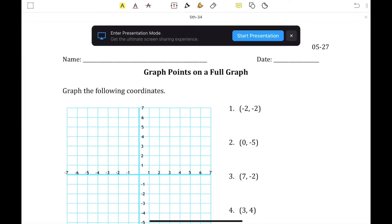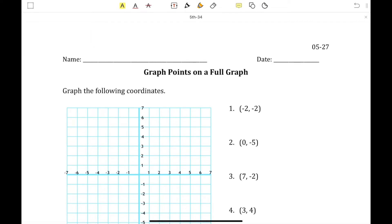Hello, fourth graders. This is lesson number 27, and the first section is graph points on a full graph. It says graph the following coordinates, and we're going to graph number 1 and number 3 together.